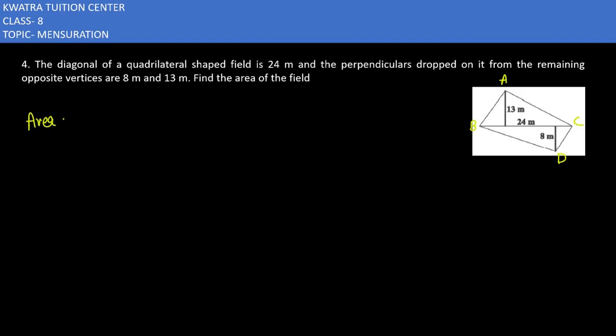The area of the field is divided into two parts, equal to the area of triangle ABC plus the area of triangle BCD.